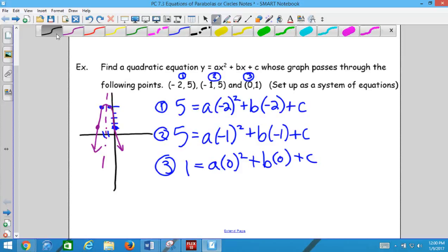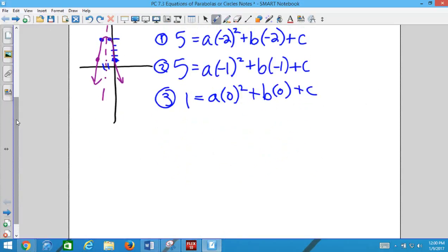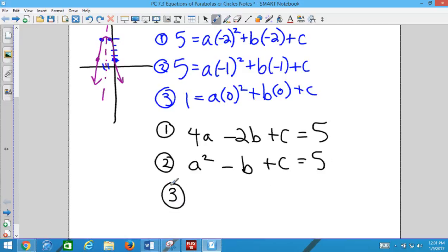So what my next step is is I'm just going to simplify these three equations. I'm going to put it in the form that we've been working in, like (-2)² is 4. So equation one, I really have 4a - 2b + c = 5. I put the 5 on the right side just because that's the way I like it. Equation two, a - b + c = 5. And equation three, c = 1.